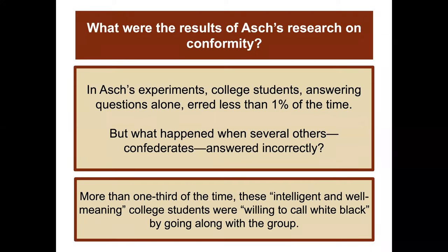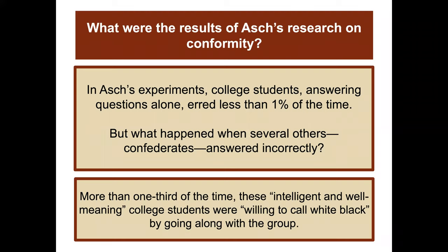What were the results? In Asch's experiments, college students answering alone erred less than one percent of the time — it was a really easy task. But when several confederates answered incorrectly, more than one third of the time these intelligent, well-meaning college students were willing to call white black by going along with the group. They conformed.